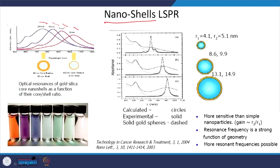We can have nanocells where you have a core and on top a shell. For different thicknesses of the core and shell, you can have different resonance peaks and colors. This is more sensitive than simple nanoparticles because the gain is proportional to R2 by R1, where R2 is the radius of the shell and R1 is the radius of the core. Resonance frequency is a strong function of geometry. You can add another shell of different material to get one more resonance, and tune the resonances and their number by varying the number of shells, their thicknesses, and their material.